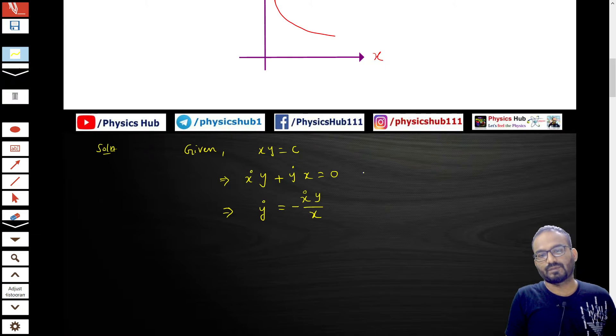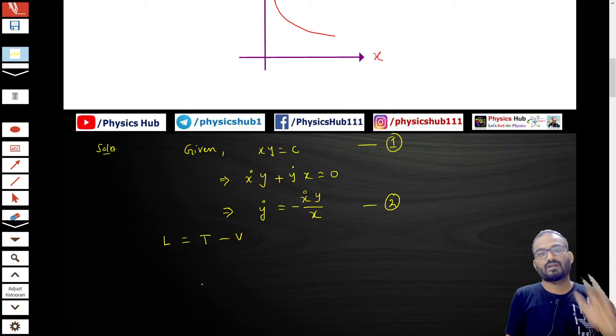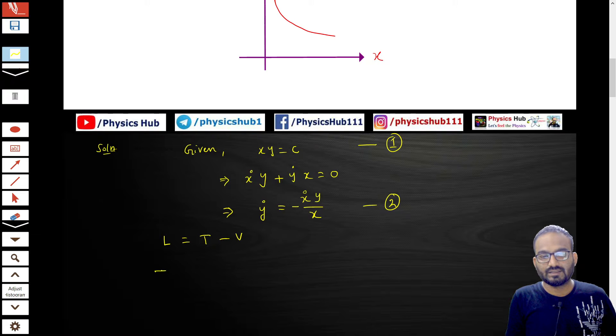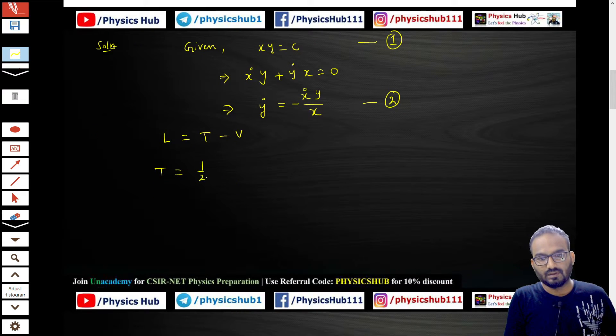So let us keep it. This is equation number 1, this is equation number 2. Now to know the Lagrangian, we need to find out kinetic energy and potential energy as well. So what is the kinetic energy of the particle of mass m? You know the formula: half m(x-dot² + y-dot²). This is the formula.